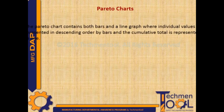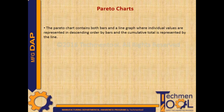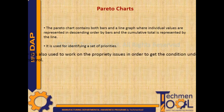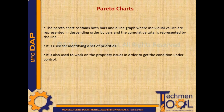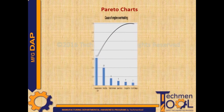Pareto Charts – a Pareto chart contains both bars and a line graph, where individual values are represented in descending order by bars and the cumulative total is represented by the line. It is used for identifying a set of priorities and to work on priority issues in order to get conditions under control. This is the sample construction of a Pareto chart.